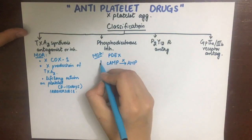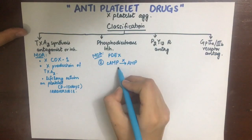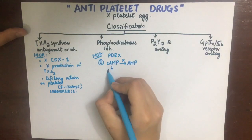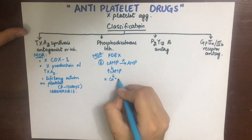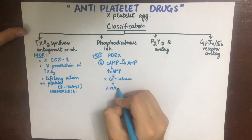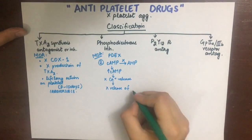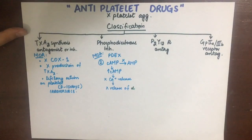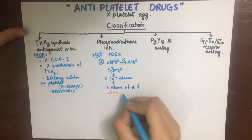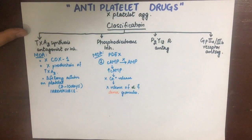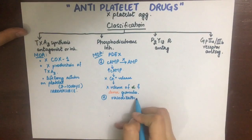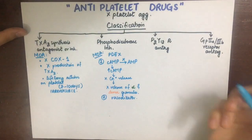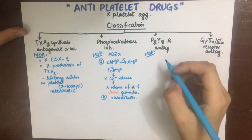Phosphodiesterase inhibitors increase cyclic AMP by inhibiting its degradation. This prevents calcium release from the endoplasmic reticulum, so the alpha and dense granules necessary for platelet aggregation are not released from the platelets. These drugs also have a vasodilator action.